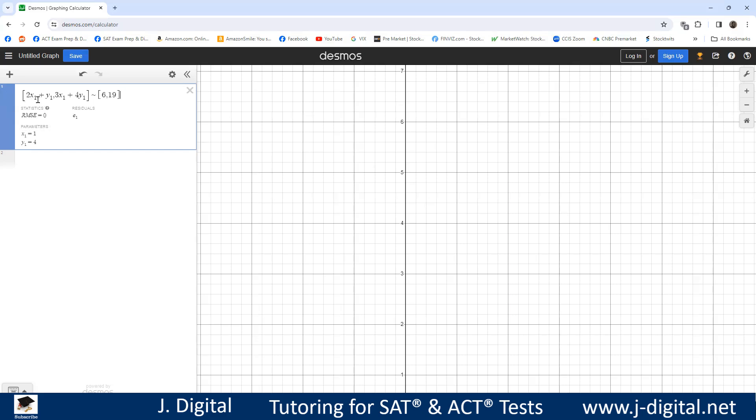So that 2x1 plus y1 equals 6 and 3x1 plus 4y1 equals 19. This will do the regression for you to figure out the values that satisfy it. So we can see here that x1 is 1 and y1 is 4.